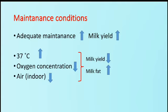The next factor is maintenance condition. At adequate maintenance, milk yield is high. At temperatures of 37°C or higher, milk yield is low, but milk fat is higher. When oxygen concentration is low, milk yield is low and milk fat is high. Regarding ventilation, in indoor conditions with poor air quality applied to dairy cows, milk yield is low and milk fat is high.